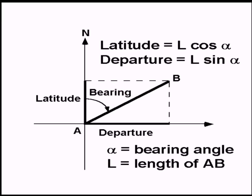Latitude can be calculated as L·cosθ, where θ (or α) is the bearing. Departure is equal to L·sinα, where α is the bearing and L is the length of the line.